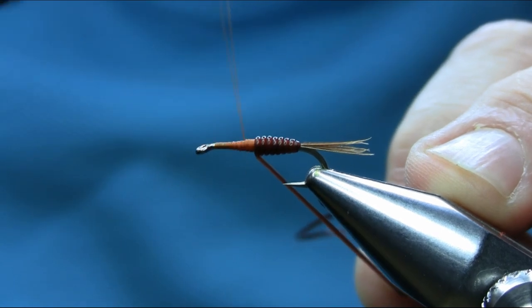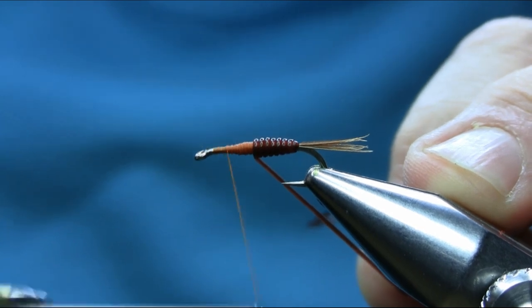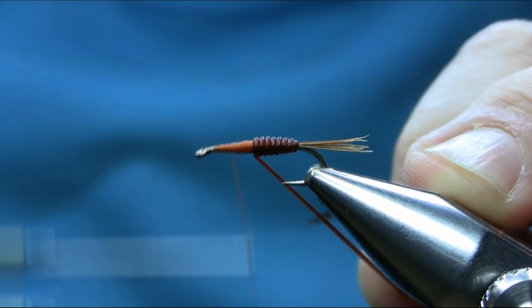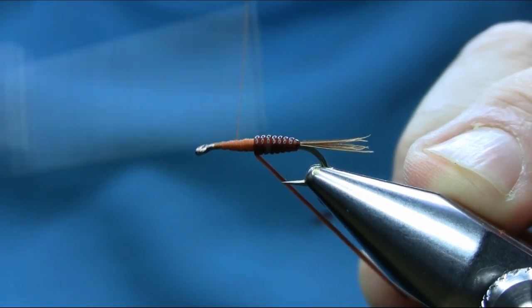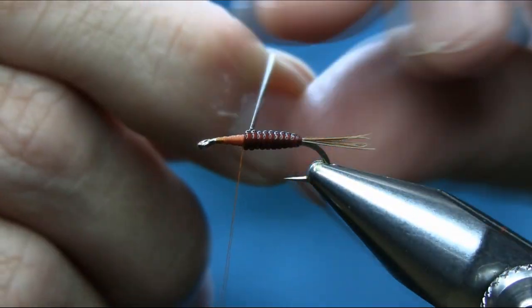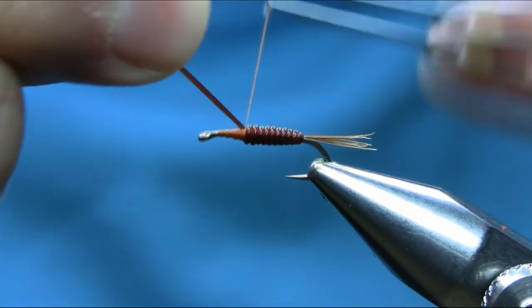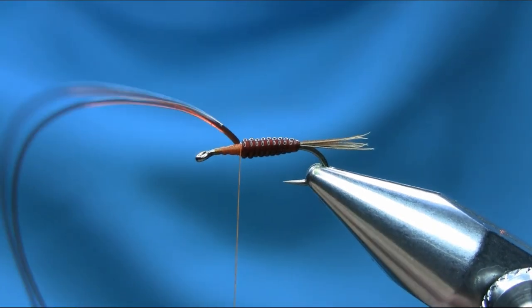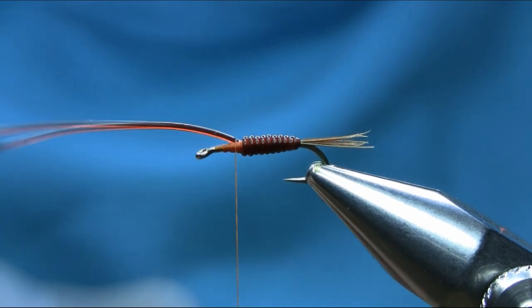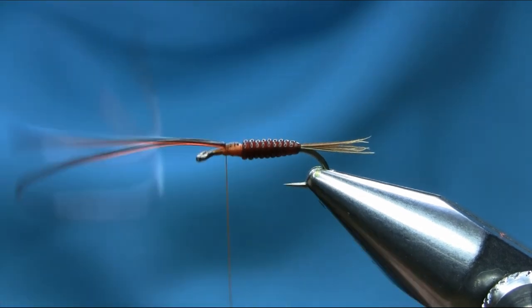Because the shape has to be nice, if you think it's not even just work with the edge with the thread and level that up. Then keep going and catch it here. Leave enough space for the head because we need a nice thorax here. Secure this properly, make sure you do that on top of the hook so it'll be all right.